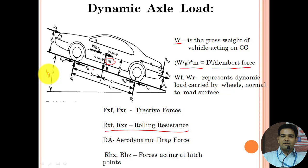We also consider aerodynamic drag force when accounting for vehicle speed — this acts as a resisting force opposing motion. If the vehicle is towing something at the rear, we have a hitch force with two perpendicular components: RHZ, the perpendicular component, and RHX, the hitch force in the longitudinal direction (parallel to the road).